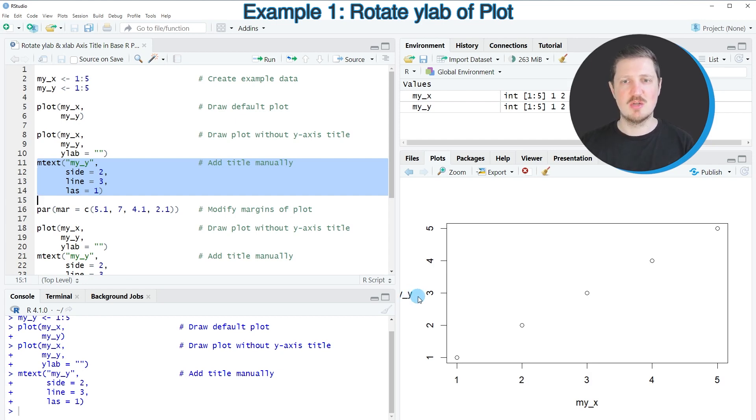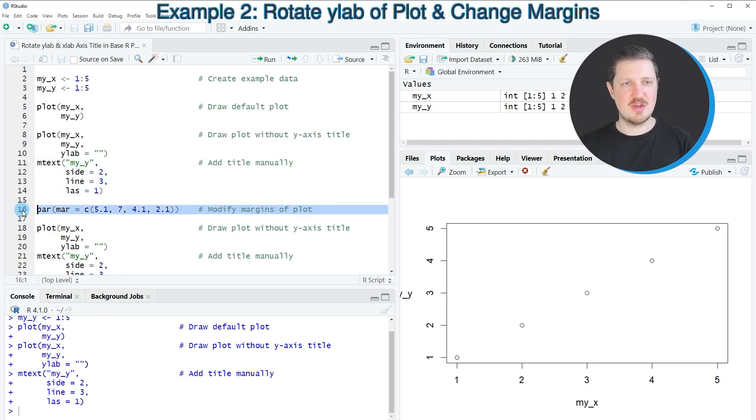However, we have one problem: the label is cut off because there's not enough space. To change that, we use the par function to specify the margins using the ma argument. We assign a vector containing four values, each corresponding to the space around one side of the plot. The second value, 7, corresponds to the left side and is larger than the default, specifying more space on the left.